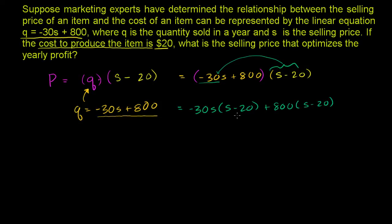S minus 20. And so this gives us, this is equal to negative 30S times S. We have to distribute again. Negative 30S squared. Negative 30S times negative 20 is going to be positive 600S. And then we have 800 times S. So that's plus 800S. And then 800 times negative 20. So that is negative 8 times 2 is 16. And we have one, two, three zeros. One, two, three zeros. And if we simplify, we can add these two terms right over here.